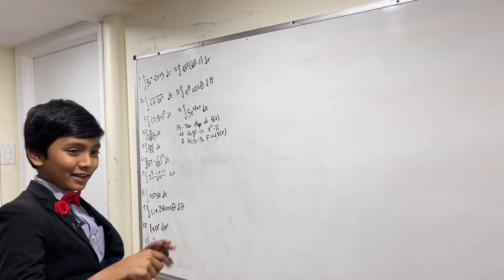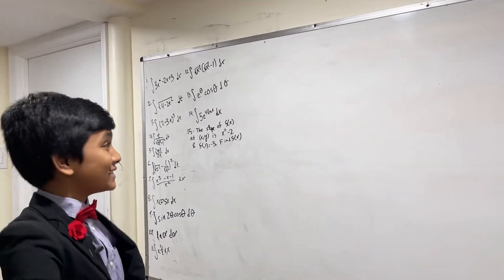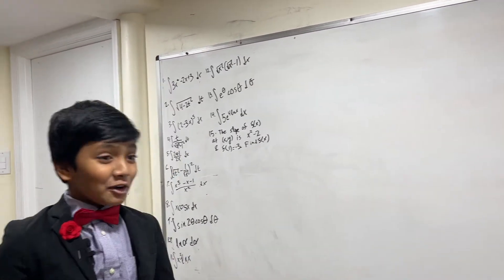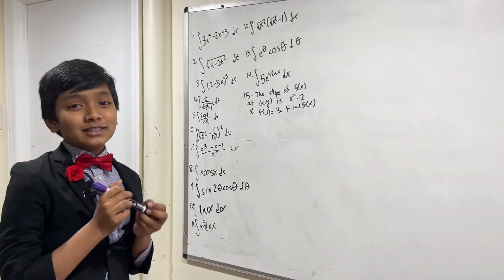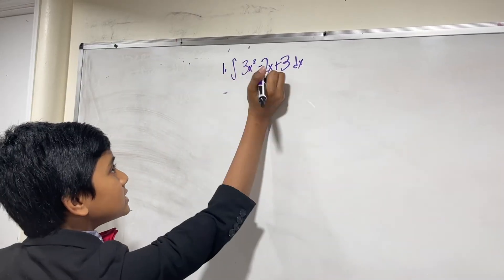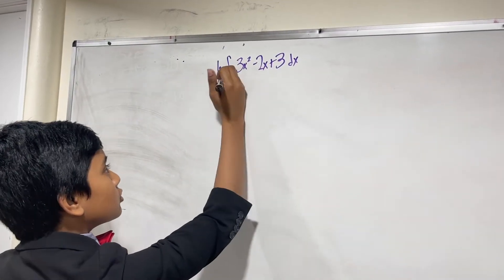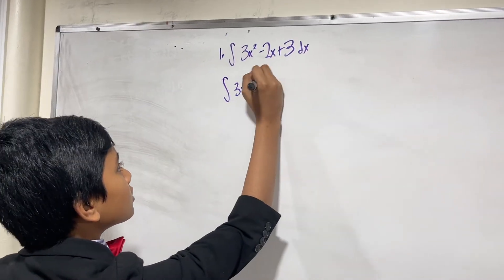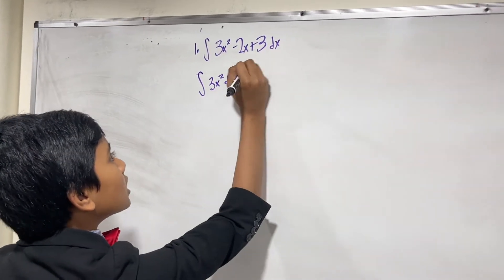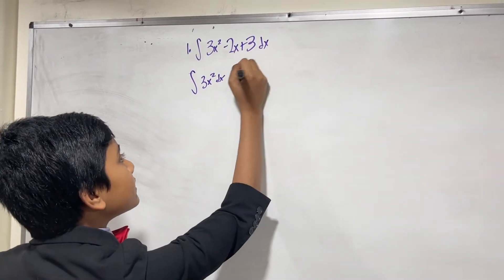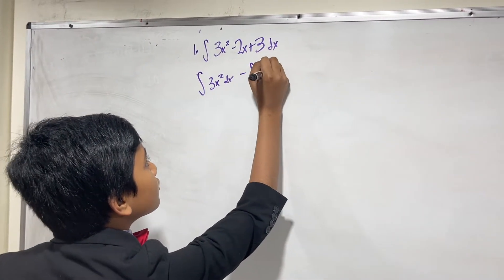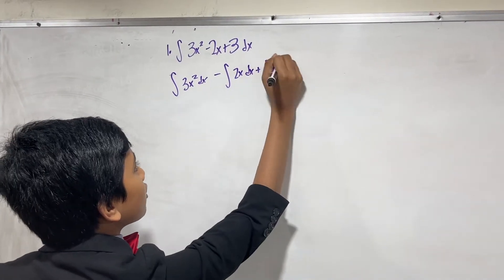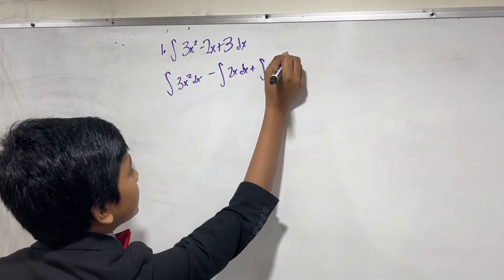Hello everybody, my name is Sabrina Isaac-Berry from Barrier Science Lab, and today we're doing some integral exercises. This is simply equal to the integral of 3x squared dx, minus the integral of 2x dx, plus the integral of 3 dx.